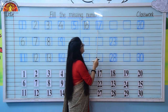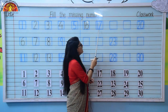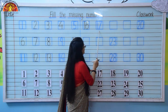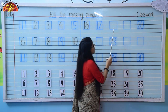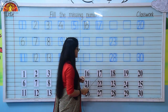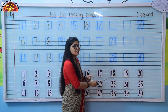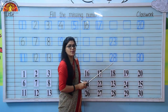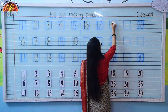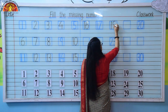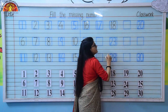Come to next one. Number 17 is already written over here. Come to next one — again the number is missing. So which number comes after 17? It's 18. So in this box we will write number 18: 1, 8, 18.